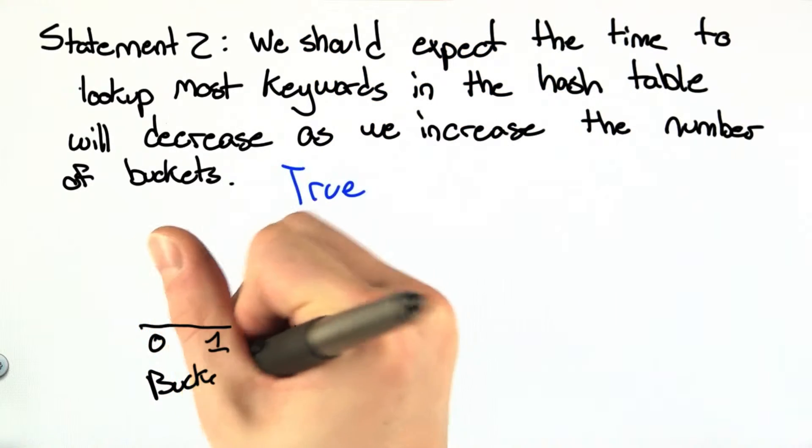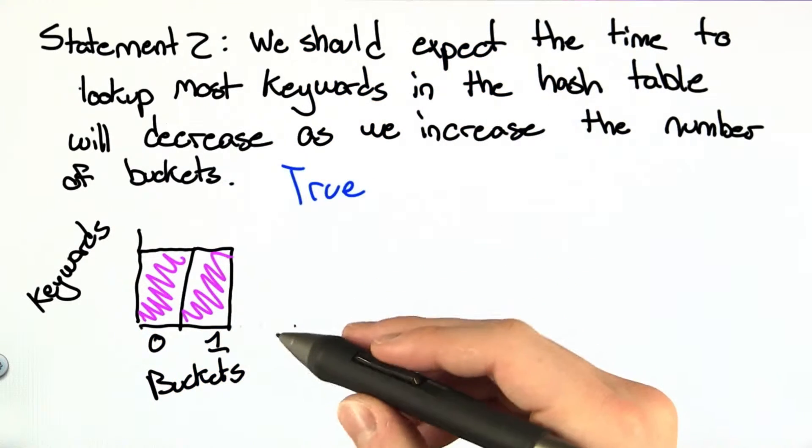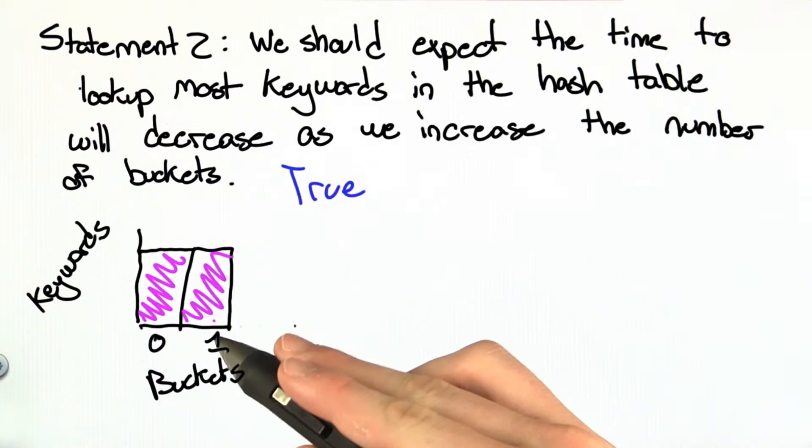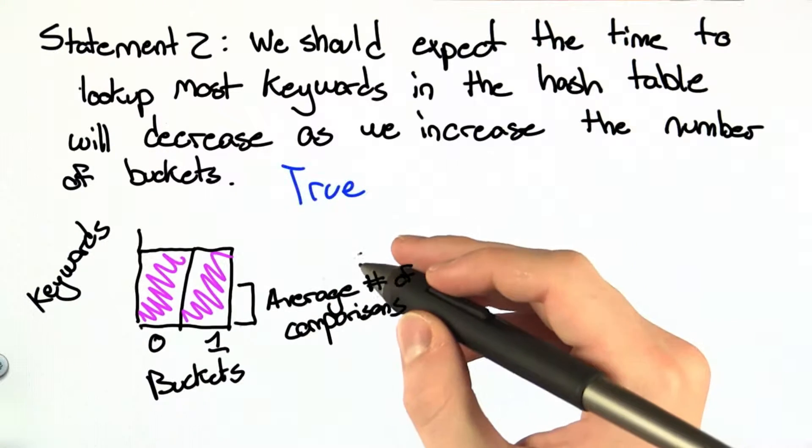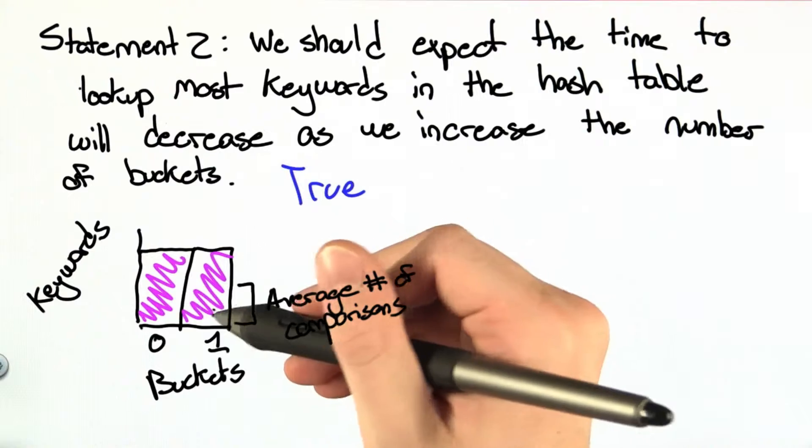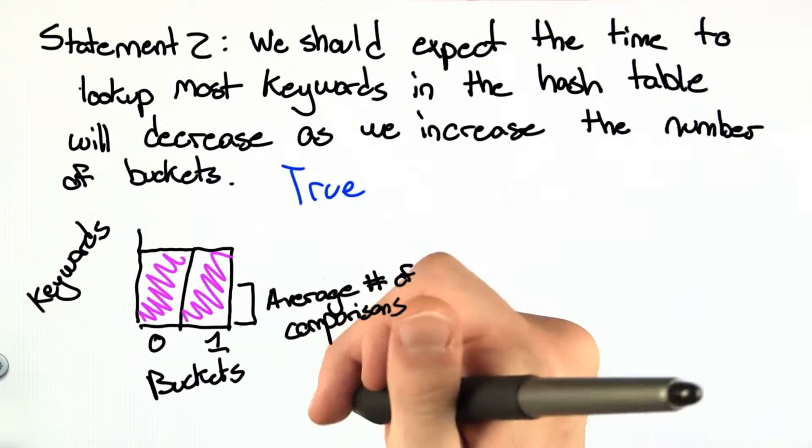Let's say we have a hash table with only two buckets. If we have a good hash function, the number of keywords in each bucket is the same. And so the average number of comparisons is going to be half the size of a bucket in order to look up a keyword in the hash table.